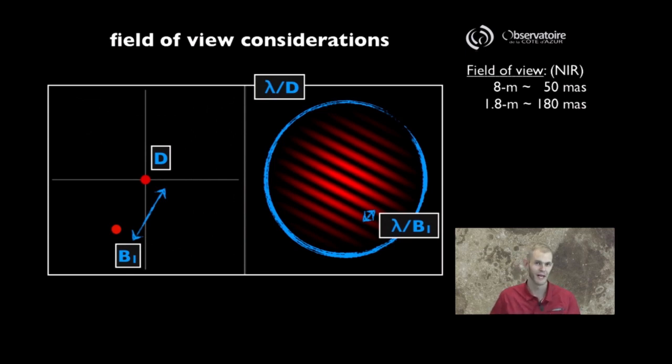Those numbers of 8 and 1.8 are, of course, picked because they do happen to correspond to the sizes of the telescopes that are currently used at the VLTI. And so this is a strategy for your observing. Keep in mind that you may actually prefer to go with the smaller telescopes, not necessarily the large telescopes to carry out your observation.